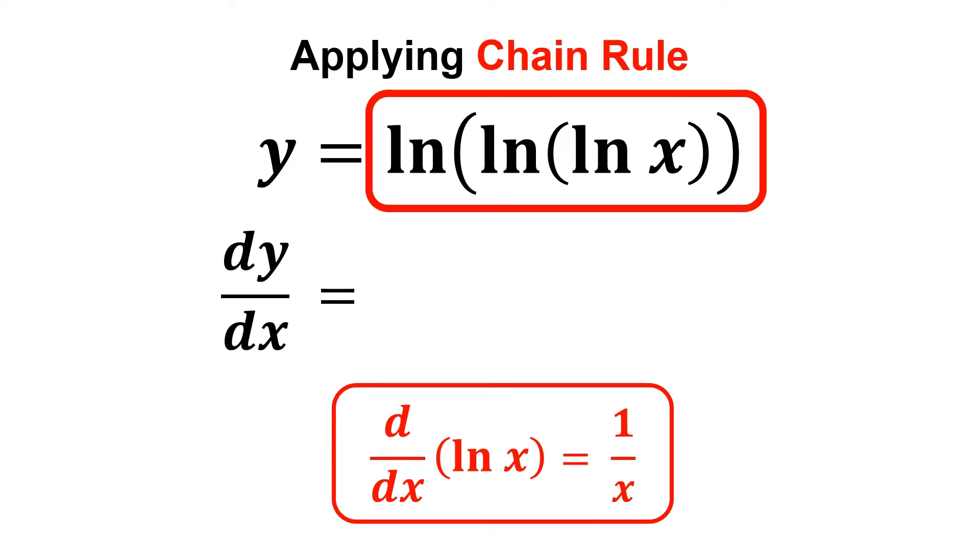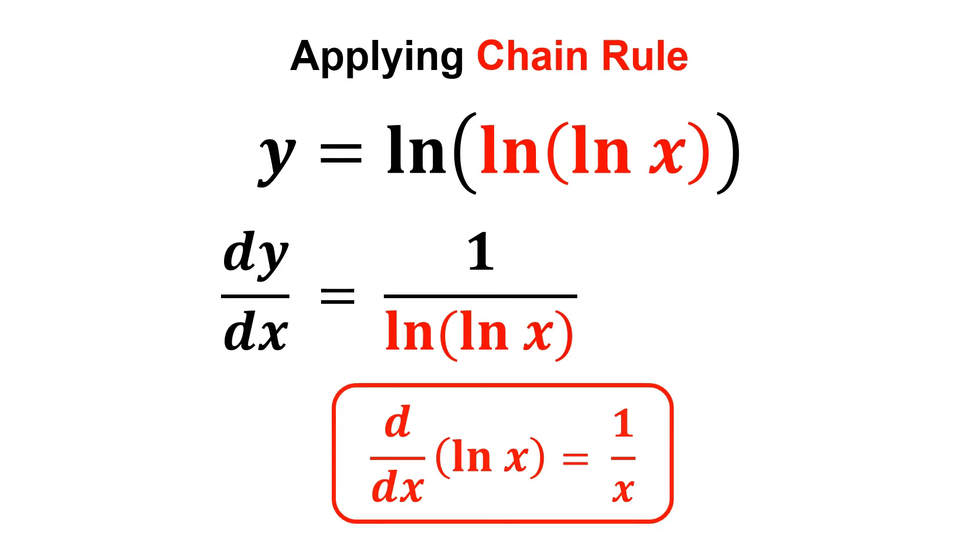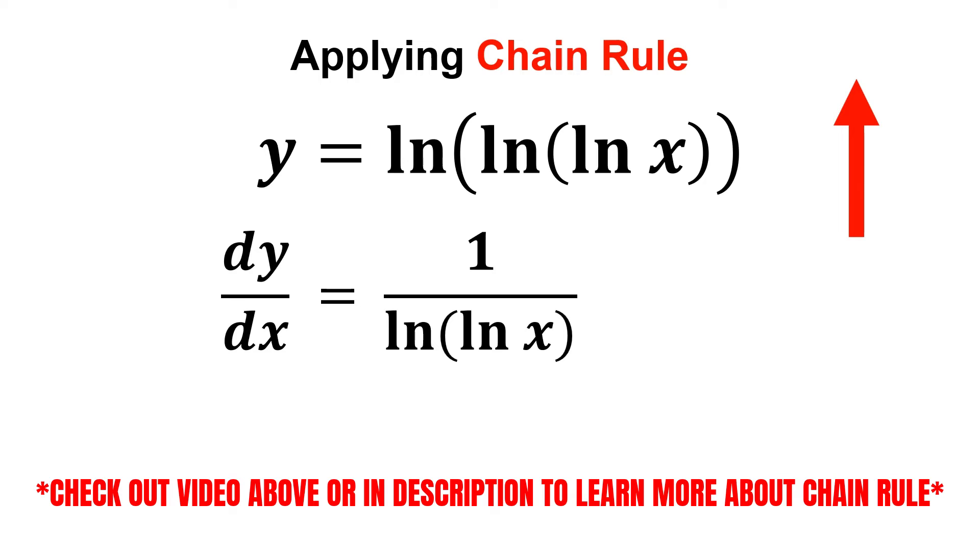Suppose that we have ln x. But for now, notice that we have ln of ln x inside the brackets, so we will be getting 1 over ln of ln x. You may check out the video above or in description if you want to learn more about the chain rule.